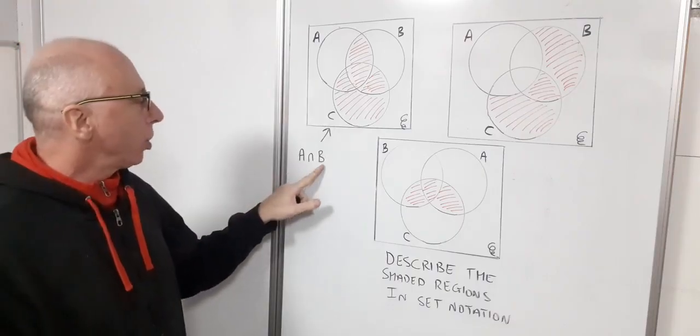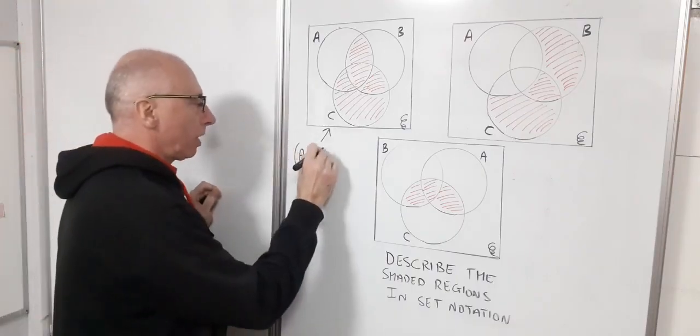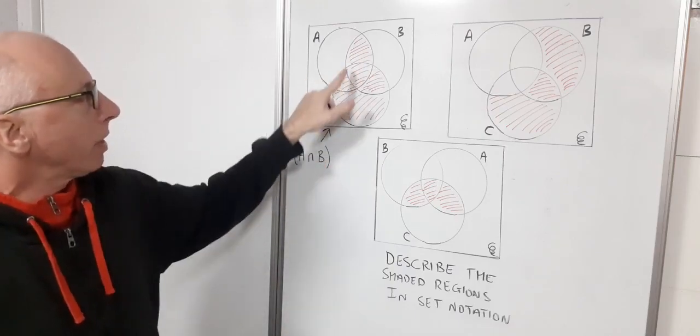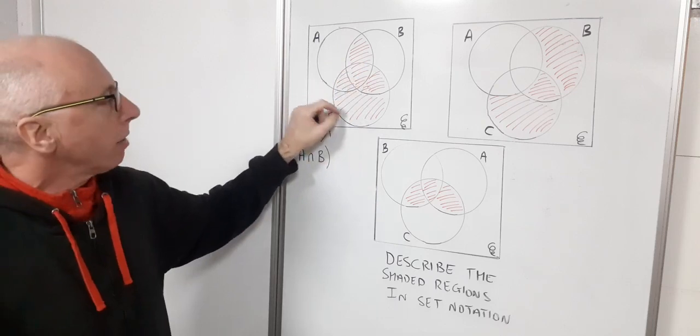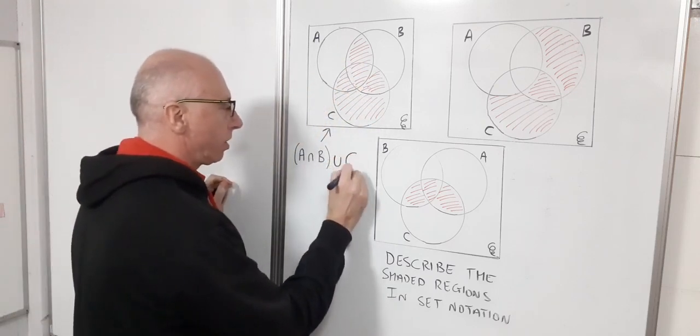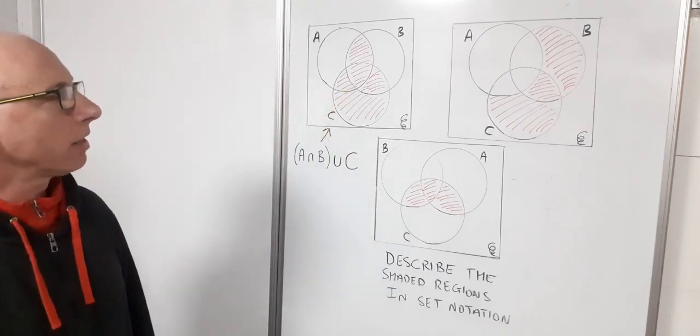I don't want to change what this bit here comes to, so if I put this bit in a bracket and call that A intersection B, that bit could then be in union with all of C. So that's in union with C, and that's how I would describe that first Venn diagram.